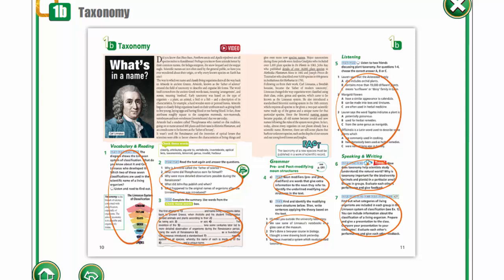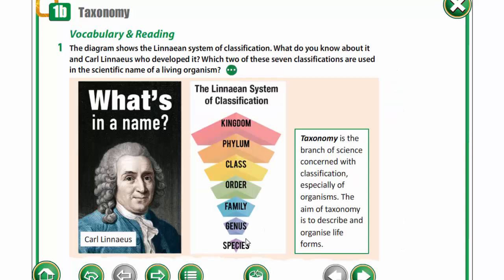Today we are going to speak about taxonomy. Open your books at page 10, look at the picture of Carl Linnaeus and his diagram and say, please, which of these seven classifications are used in the scientific name of a living organism.